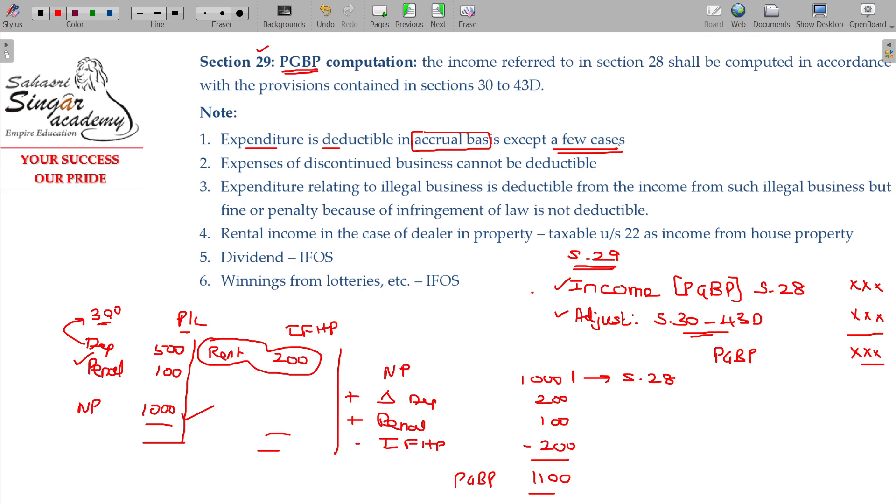For example, income from house property, you have to debit it. But municipal tax will be paid before 31st March.